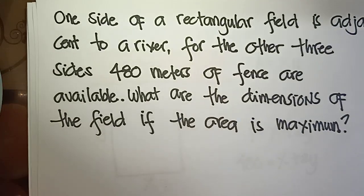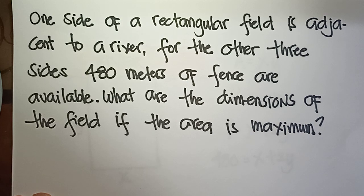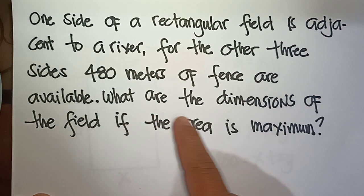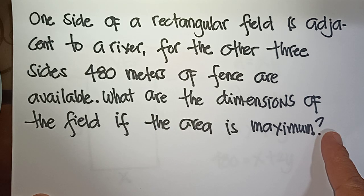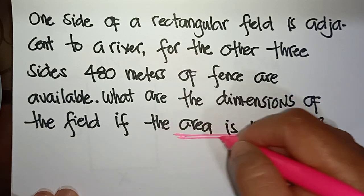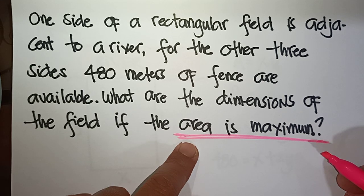We have another example on maxima and minima. One side of a rectangular field is adjacent to a river. For the other three sides, 480 meters of fence are available. We need to find the dimensions of the field if the area is maximum. So the quantity to be maximized here is the area.